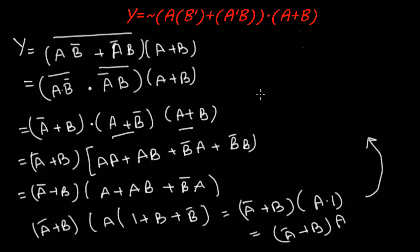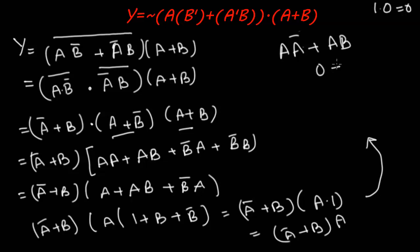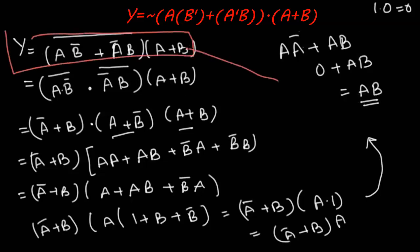We have b AND-ed with (a plus b). Opening the bracket: a·a-bar plus ab. Now a dot a-bar equals zero by the Inverse Law, so we have zero plus ab. And zero plus any number is the number itself, so the answer is ab. Such a big expression simplified down to just ab.